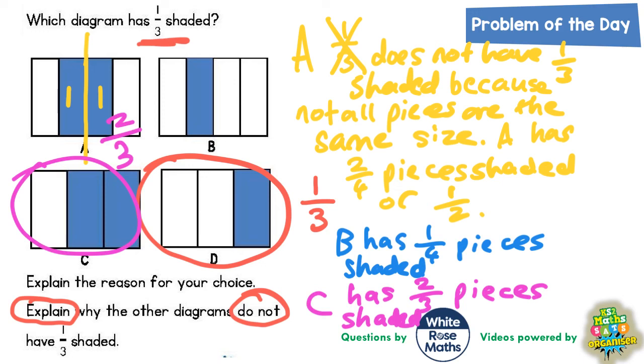So to recap, A has two out of four pieces or a half shaded, B has one out of four pieces shaded, C has two out of three pieces shaded or two thirds, and D is the only one that has one out of three pieces shaded.